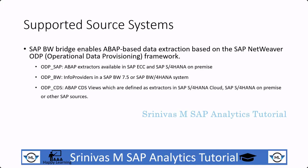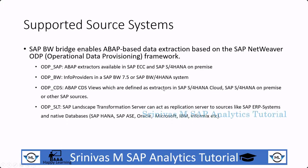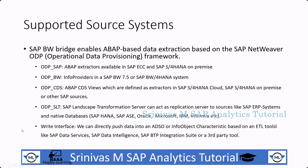The next connection type is ODP CDS, using which we can use ABAP-based CDS data sources created under an S4HANA system. Then there is ODP SLT, which allows replicating data from SAP ERP systems and native HANA databases like SAP HANA, and other databases like Oracle. Finally, the write interface allows directly pushing data into ADSO or info objects using a write interface mechanism.